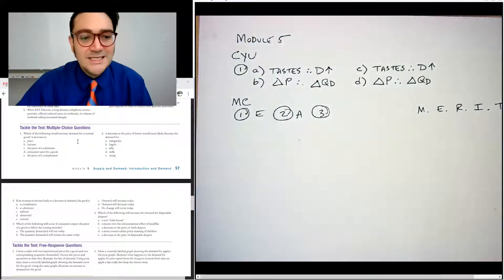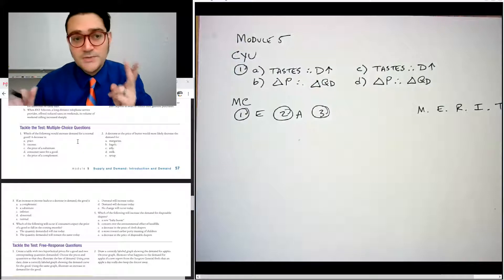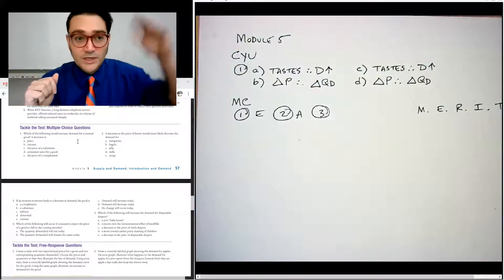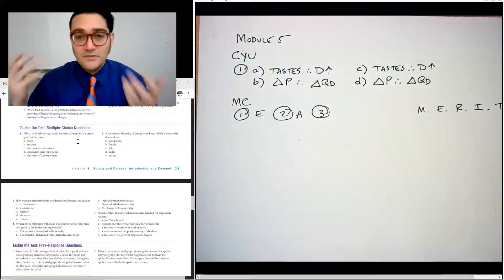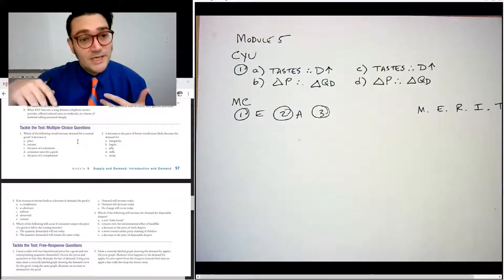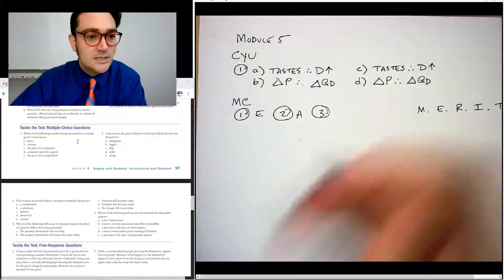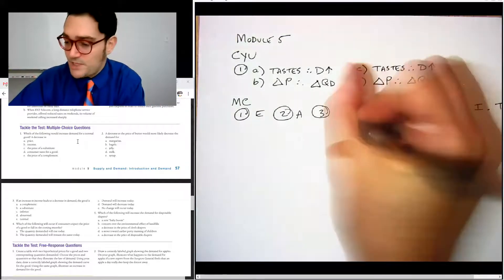Number three, if an increase in income leads to a decrease in demand, then the good is. So remember there are two types of goods. There's inferior goods and normal goods. And with normal goods, if your income goes up, you buy more of it. With an inferior good, if your income goes up, you buy less of it. That's like ramen noodles. So we would say a decrease in income would be B.